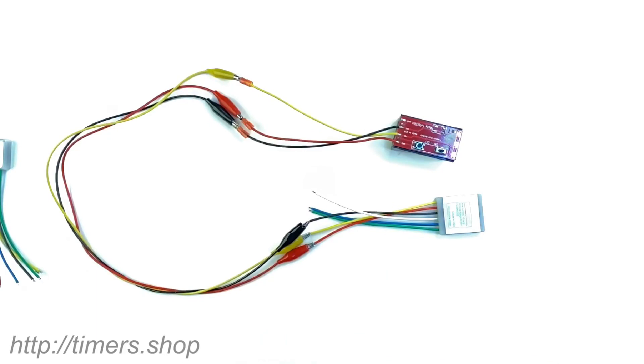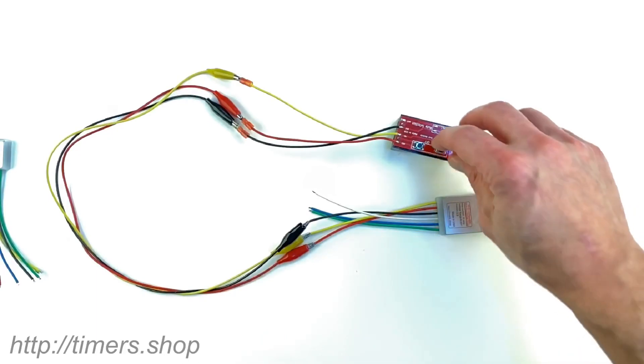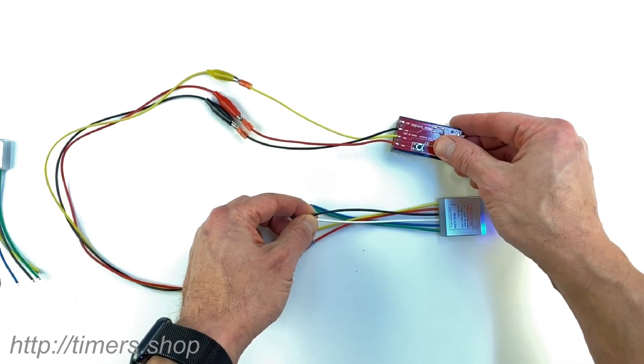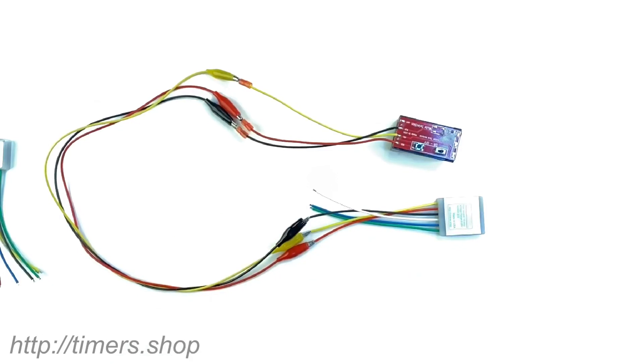You can change the configuration via the phone at any time. The only thing that you need to do is ground the white wire, turn the power on and then connect from your phone to the Timershop network.